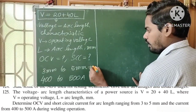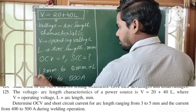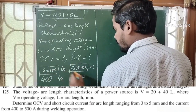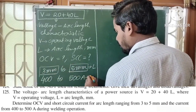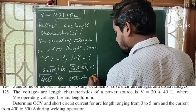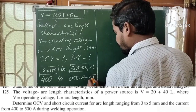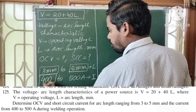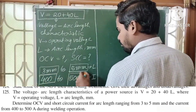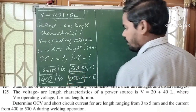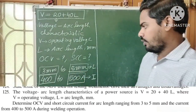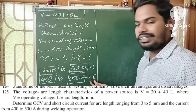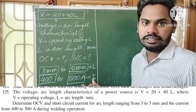So arc length has a minimum value L1 and maximum value L2. Current, denoted by capital I, varies from a minimum of 400 amperes to a maximum of 500 amperes. The arc length range and current range are given.